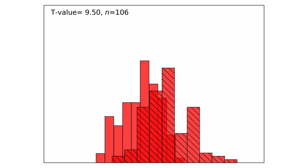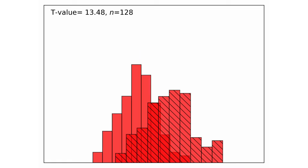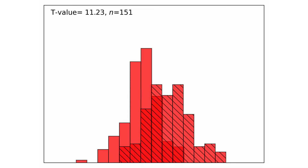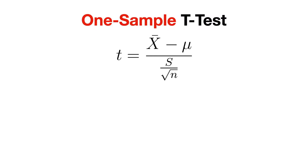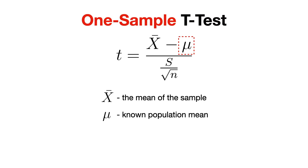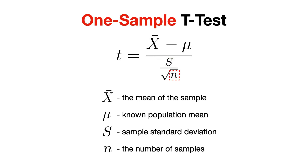But what if we don't have two groups or repeated measurements? What if we only have one group of students and we want to compare their test scores to a known average, such as a national benchmark score? This is where the one-sample t-test comes into play, which is used to compare the mean of a single group to a known value or population mean. The formula looks something like this: x-bar is the sample mean, mu is the known population mean, s is the sample standard deviation, and n is the sample size. This test is useful when, for example, you want to check if your students' average score significantly differs from the national average or from a target score.